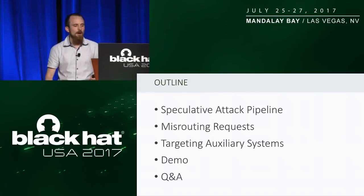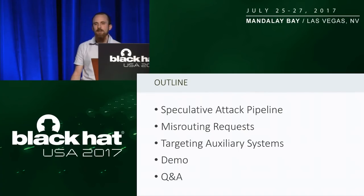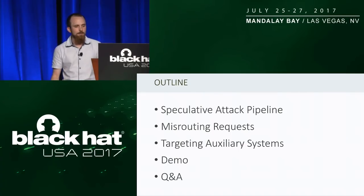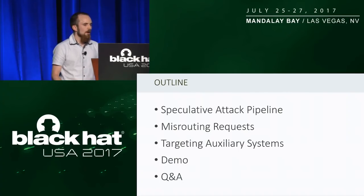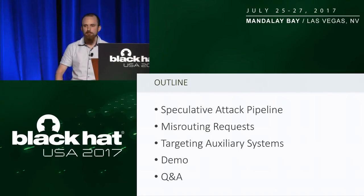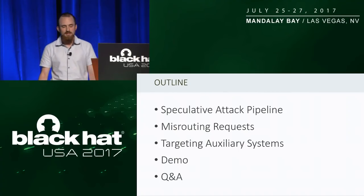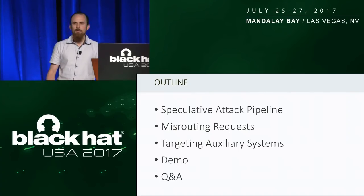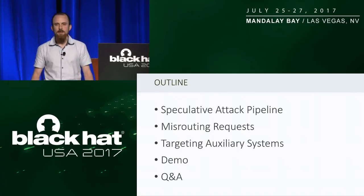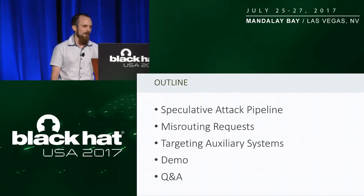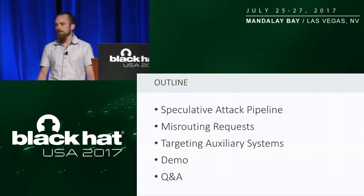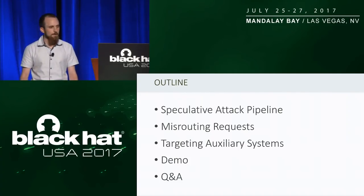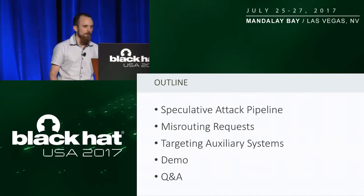First I'll talk about how to build a speculative attack pipeline that lets us efficiently hunt these systems down and initiate a conversation with them. After that I'll describe two key types of attacks: one focused on targeting front-end systems like reverse proxies by making them misroute requests, and one focused on targeting back-end systems like analytics systems where we have to be more inventive to get a useful exploit. After that I'll do a brief demo of one of the tools I'll be releasing, then wrap up and take five minutes of questions.